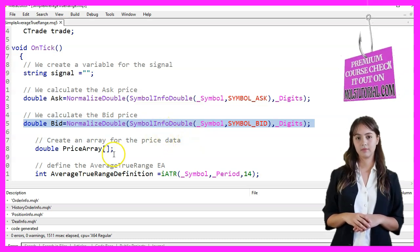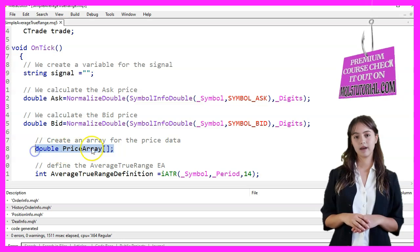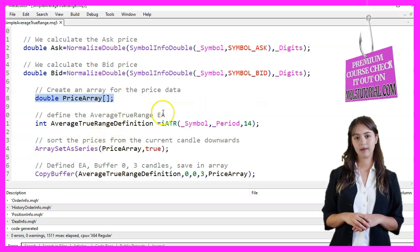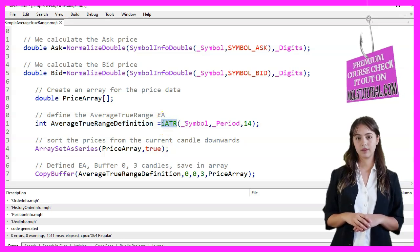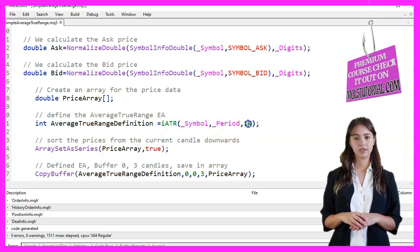Next, we create an array named PriceArray to hold the price data. We define the Average True Range EA using the iAir function with the current symbol, the current period, and a period of 14.